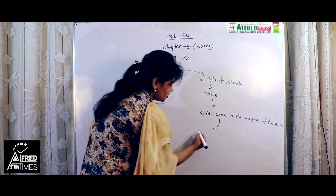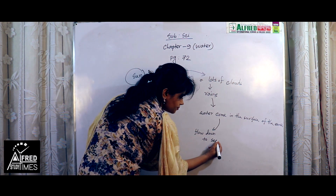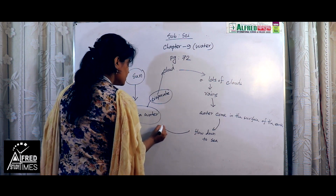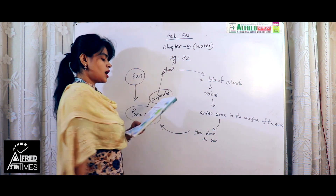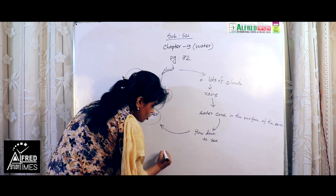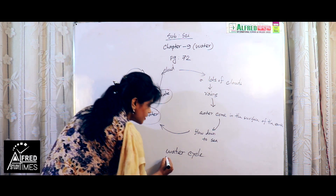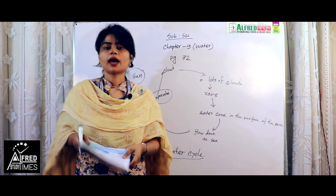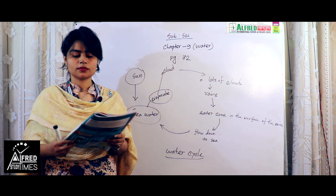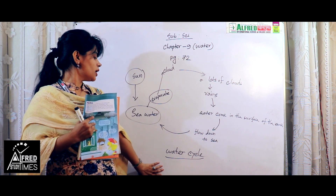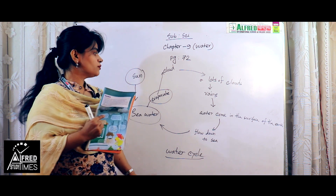When water comes to the surface of the earth, it flows down to the sea. And the water of the sea again evaporates because of the heat of the sun, and it becomes clouds, and the same procedure goes on. This cycle is called the water cycle, and the procedure is going on and on. We can easily see how the water cycle works. This cycle will help you to understand the lesson properly. You can note it down — it will be helpful for you in the future.